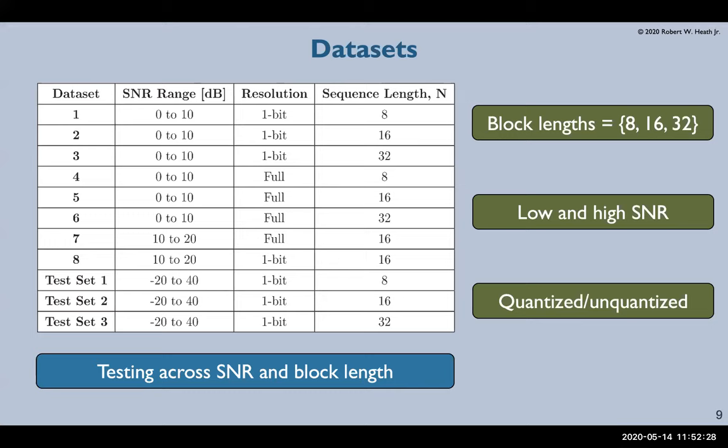To generate the data we use uniformly distributed phase and frequency to create sinusoids. Then we add Gaussian noise and apply the quantization function. We found in our initial investigation that using SNR below our low range which is 0 to 10 dB here, the received data was actually just too noisy to learn the function.